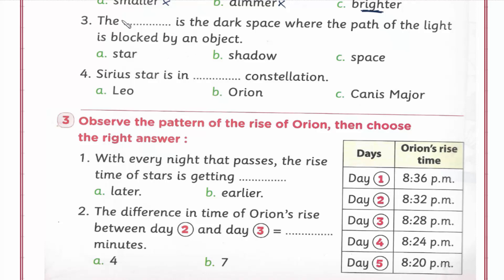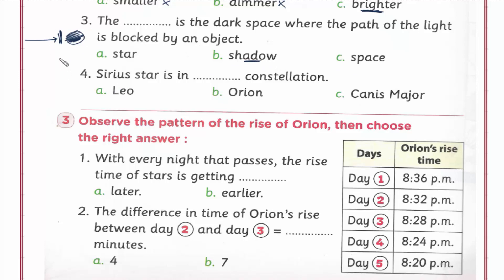Number three: A shadow is the dark space where the path of the light is blocked by an object. Shadow هو اللي بيتكون نتيجة البلوكينج of the path of the light - اللايت بيكون ماشي، واجه نحط object قدامه فيحصل blocking، ويتكون dark space. ده اسمه shadow.